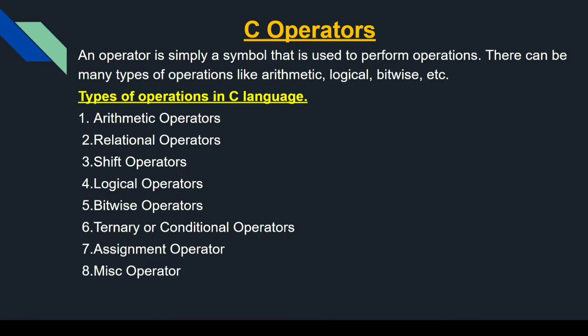What is an operator? It is simply a symbol that is used to perform operations. There can be many types of operations like arithmetic, logical, bitwise, etc. Types of operations in C language: arithmetic operation, relational operation, shift operation, logical operators, bitwise operators.